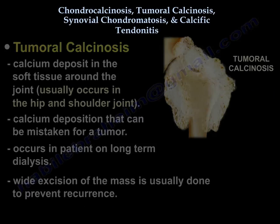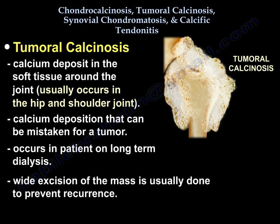Tumoral calcinosis is calcium deposit in the soft tissue around the joint, usually the hip joint and the shoulder joint. People think it's a tumor because the mass grows. It occurs in patients on long-term dialysis. It is calcium deposition that resembles a tumor but is not a tumor — there are no neoplastic cells. Wide excision is usually performed for this mass so it doesn't come back.